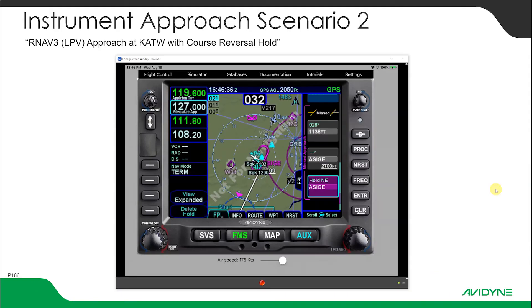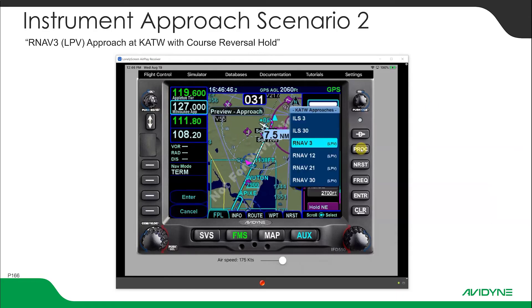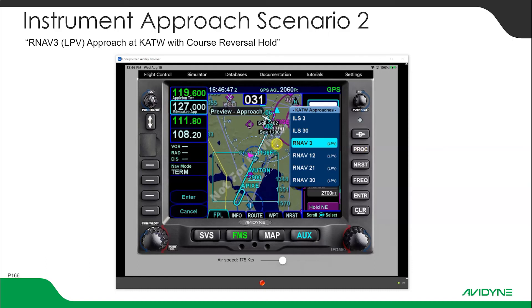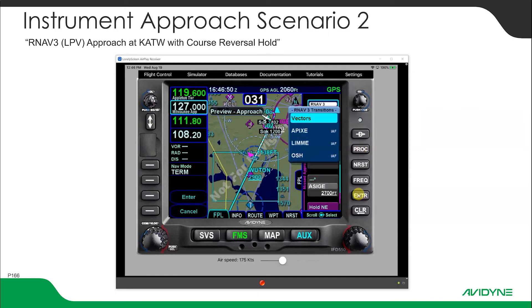We're sitting at SIGI. One of the things we want to do is load the RNAV-3 approach again, so let's hit the procedure button. We're going to select the RNAV-3 and push enter. We're going to use the initial approach fix at Apixi — select that and push enter.